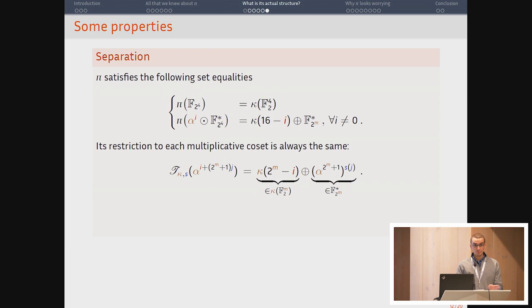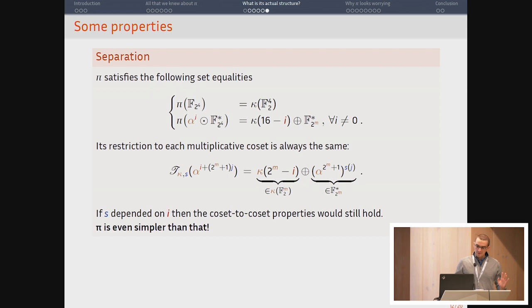But what is important is that it has a kind of separation property. So if you have that your input is in a given multiplicative coset, it will always be in the same additive coset because when you change J here, you change the J here. And so it only changes where you are in this set. The additive coset doesn't change. At the same time, if you fix J and you change the multiplicative coset, you will be at the same spot in the additive coset. You will just change the additive coset.